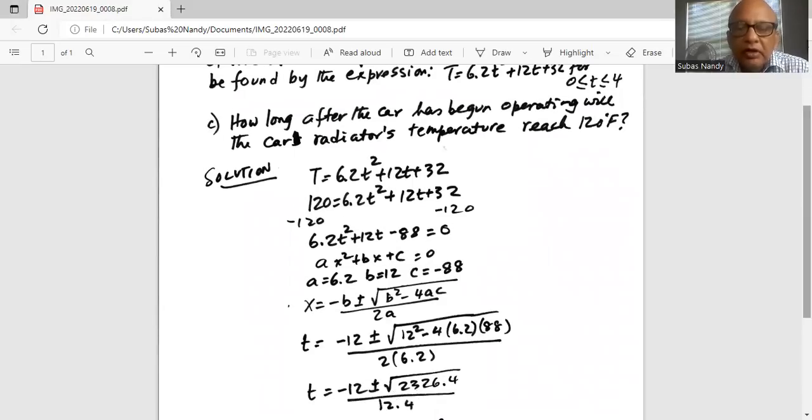Now we compare that with the standard form of Quadratic Equation: Ax² + bx + c = 0. Our a is 6.2, the coefficient of t². Our b is 12, which is the coefficient of t. And our c is -88. So we plug it in the solution for x.